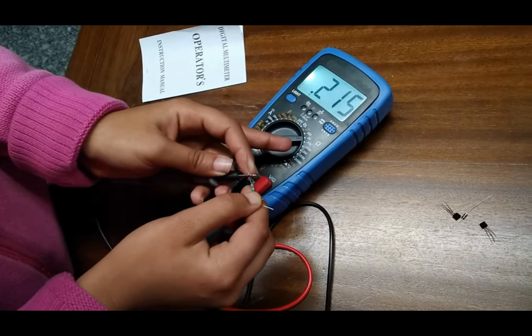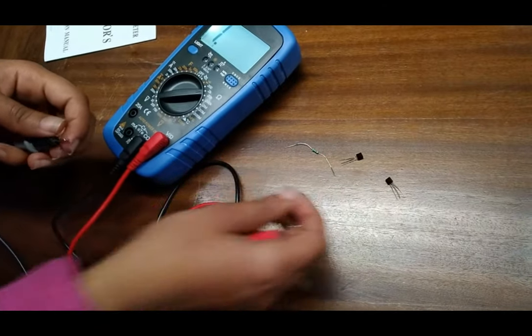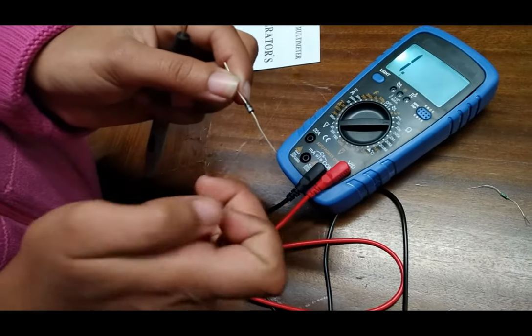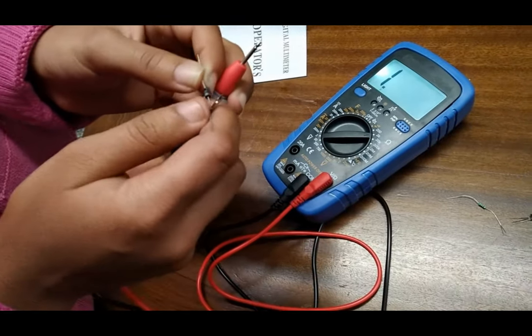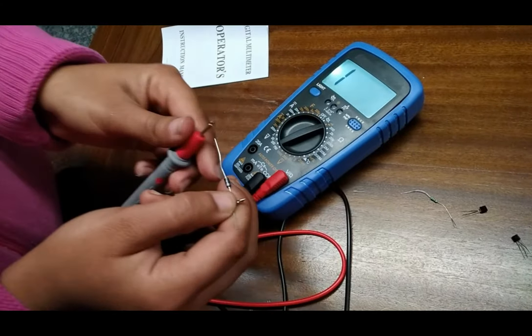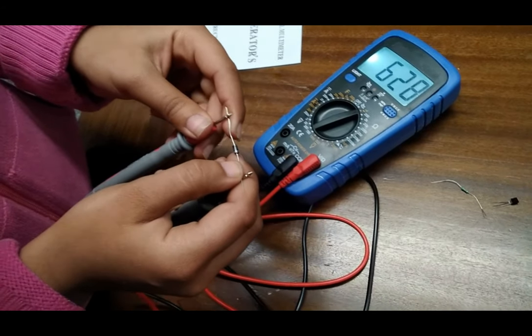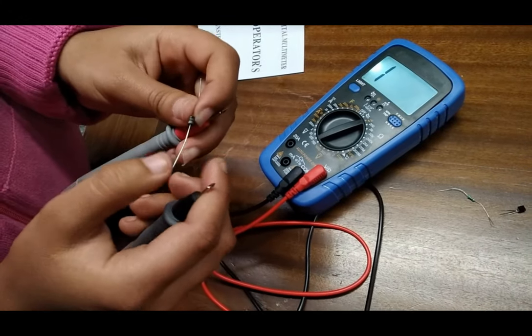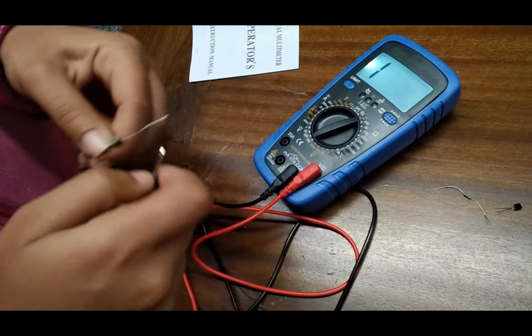As we have set the range to 2k ohm, now we are testing our diode. This is the P terminal and this is the N terminal. In the forward bias condition, it will show the resistance value which is 628 ohm. And in the reverse position, it will not show any resistance value.